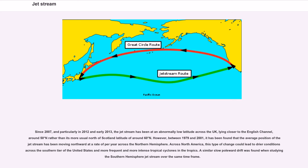However, between 1979 and 2001, it has been found that the average position of the jet stream has been moving northward at a rate of per year across the northern hemisphere. Across North America, this type of change could lead to drier conditions across the southern tier of the United States and more frequent and more intense tropical cyclones in the tropics. A similar slow poleward drift was found when studying southern hemisphere jet streams over the same time frame.